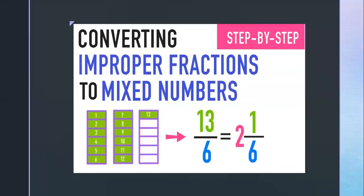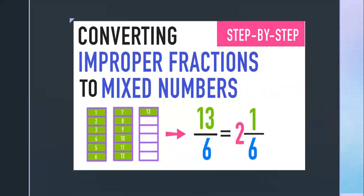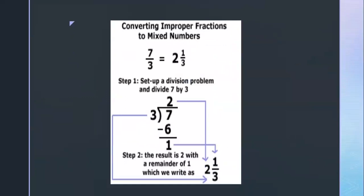How do we convert an improper fraction into a mixed fraction? It is very simple. Take seven upon two as an improper fraction. Divide seven by two: the quotient is three and the remainder is one. So the result is three and one upon two — the remainder becomes the numerator and the denominator always remains the same.